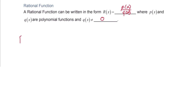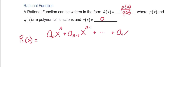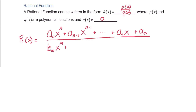Let's write out the generic definition of a rational function using the polynomial definition we saw earlier. So r of x is a sub n times x to the n, plus a sub n minus 1 times x to the n minus 1, continuing down to a sub 1 x plus a sub 0, all divided by another generic polynomial: b sub m x to the m, plus b sub m minus 1 x to the m minus 1, down to b sub 1 x plus b sub 0.